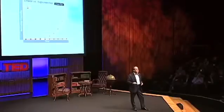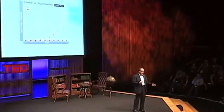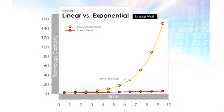The pace of exponential growth is really what describes information technologies, and it's not just computation. There's a big difference between linear and exponential growth. If I take 30 steps linearly — 1, 2, 3, 4, 5 — I get to 30. If I take 30 steps exponentially — 2, 4, 8, 16 — I get to a billion. It makes a huge difference, and that really describes information technology.